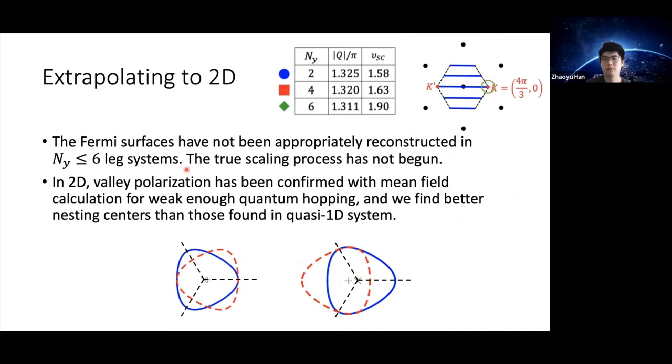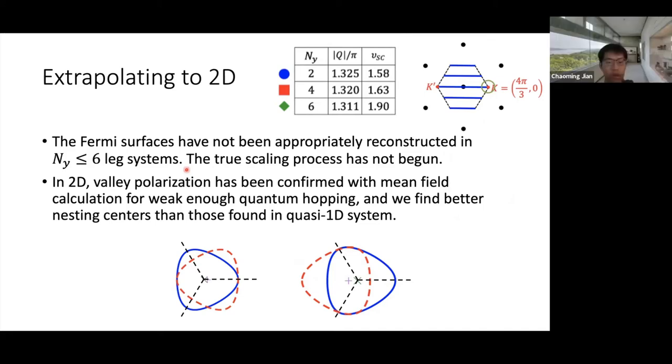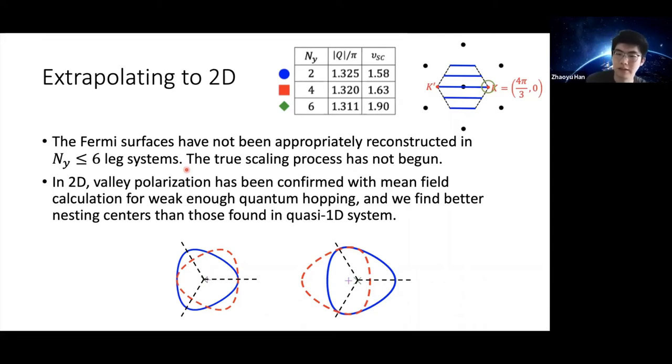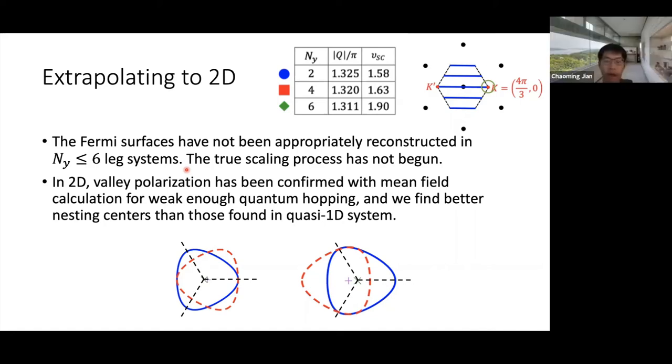Actually, regarding this slide, is the point that you're trying to say that the pair density wave Q vector is not necessarily commensurate and it just depends on energetics and just depends on how you make the biggest nesting? Yeah. And in 2D it's actually different from what we find in 1D. Right. But I guess you said that in 1D, you've never actually explored... just because of the momentum slicing, you actually haven't got to the point that you analyze this nesting effect yet, right?